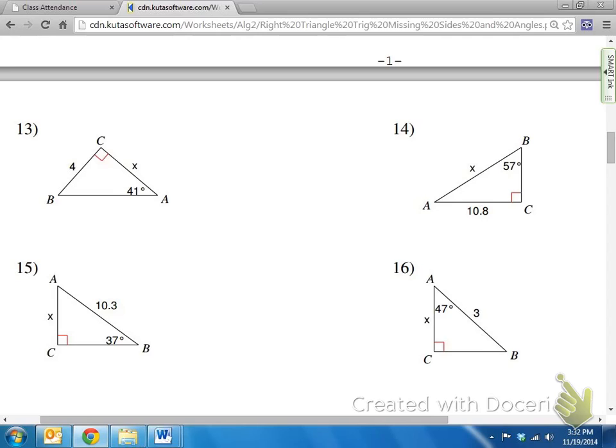Now, of course, we know that we could find the missing angles, like on number 13. We know that all the angles inside of a triangle add up to 180. So I could do 90 plus 41, which gives me 131, and then subtract it from 180. So 180 minus 131 would give me, I believe, if I'm doing my math right, 49 degrees. So 49 degrees would go there.